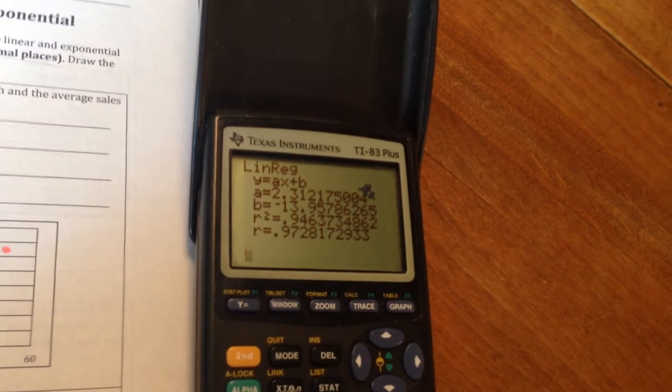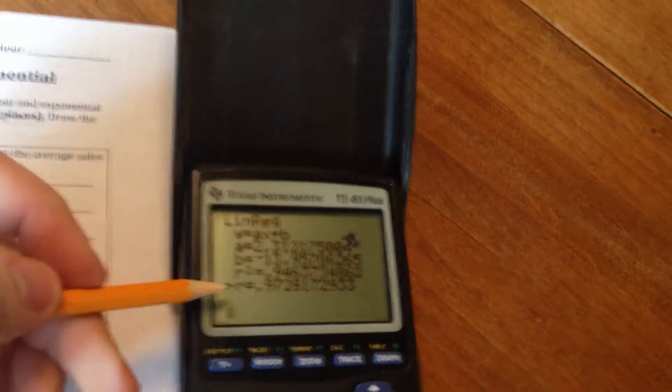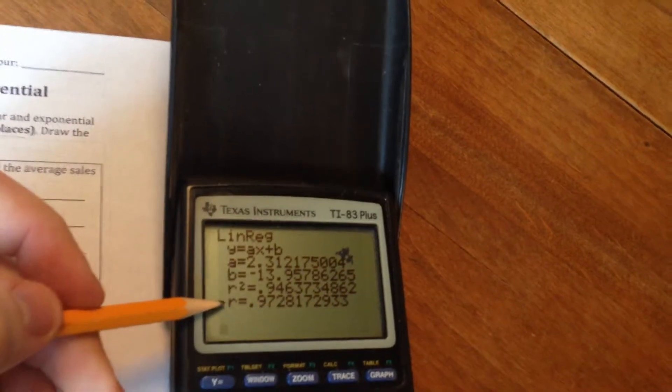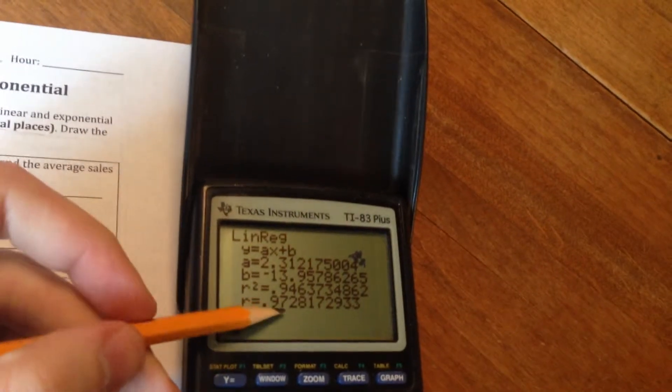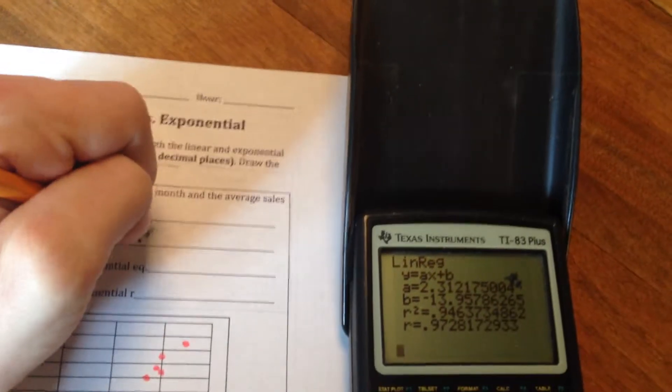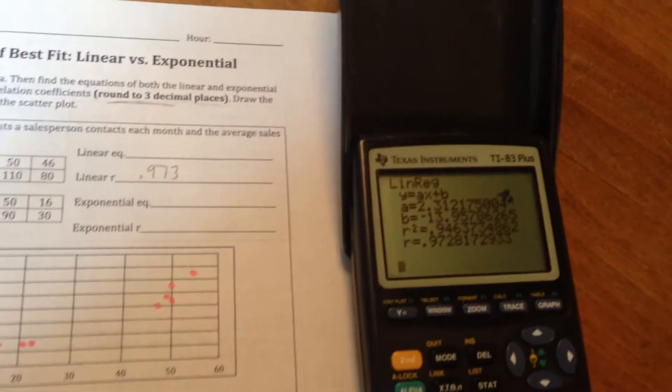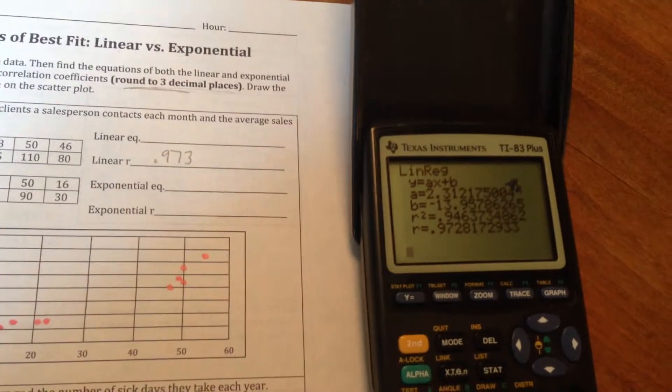Now, with that all typed in, the really easiest part to find is the regression number. It's this R number right here. That's also your correlation coefficient. And the assignment asks us to round three decimal places. So here it's going to be 0.973. So we're going to go and write that in down here. 0.973. 0.973 is our linear regression.